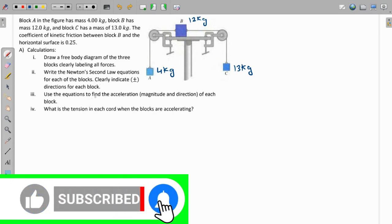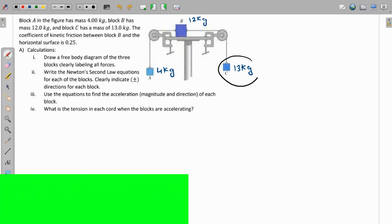Now remember that this is a heavier block, so definitely it will have a tendency to move towards this direction. So the friction will act over here because it is trying to slide over here.